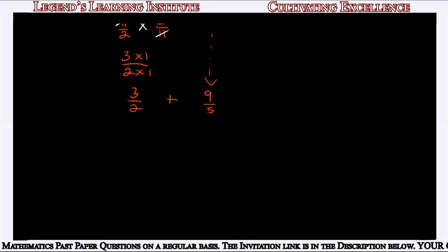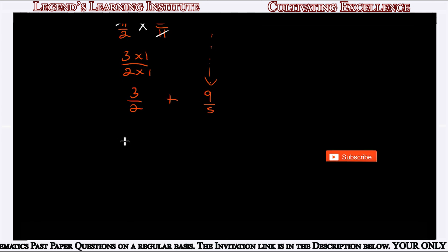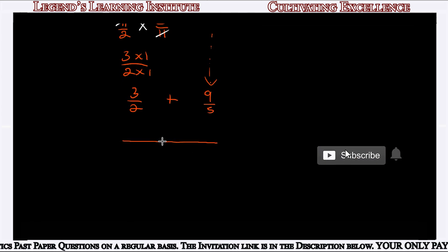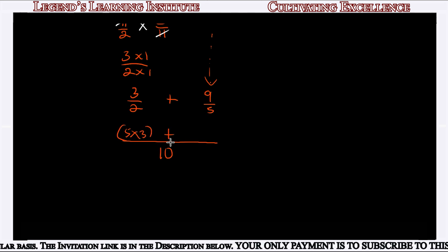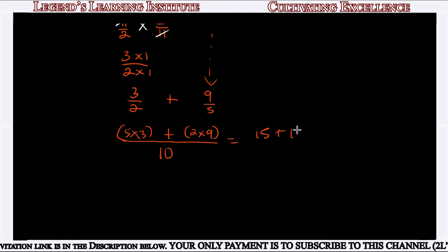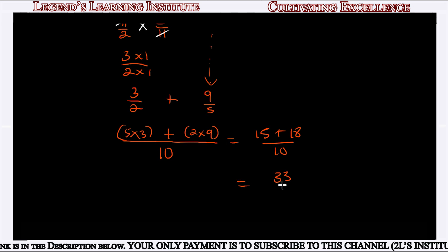Between 2 and 5, the LCM (lowest common multiple) is 10. We say 2 into 10 is 5, and 5 times 3 is 15. Then 5 into 10 is 2, and 2 times 9 is 18. So we get 15 plus 18 over 10, which equals 33/10.